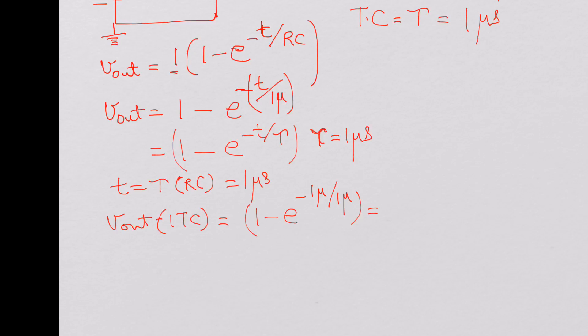So it is 1 minus e power minus 1, which works out to be 1 minus 0.367, which is 0.633 volts.